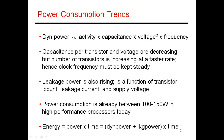Power has two major components: dynamic power and leakage power. Dynamic power is the power dissipated every time transistors switch. It is a function of activity — how many transistors are switching every single cycle — as well as the capacitances of those transistors. There are also two very important factors: voltage squared and frequency, which are aspects that architects or users have control over.